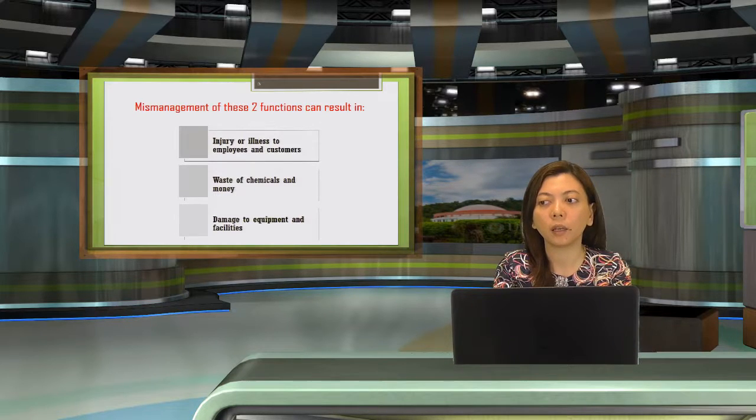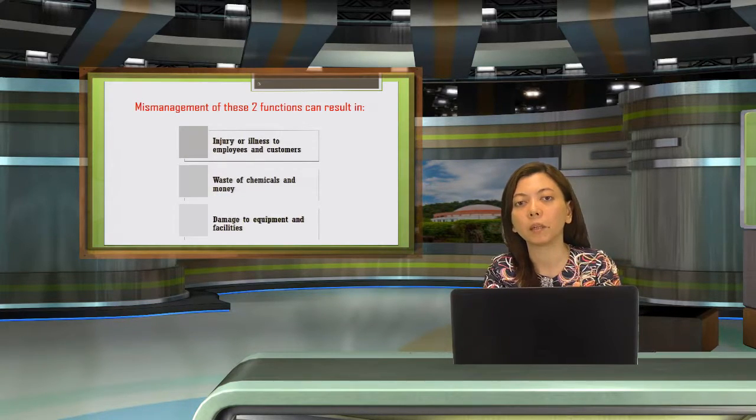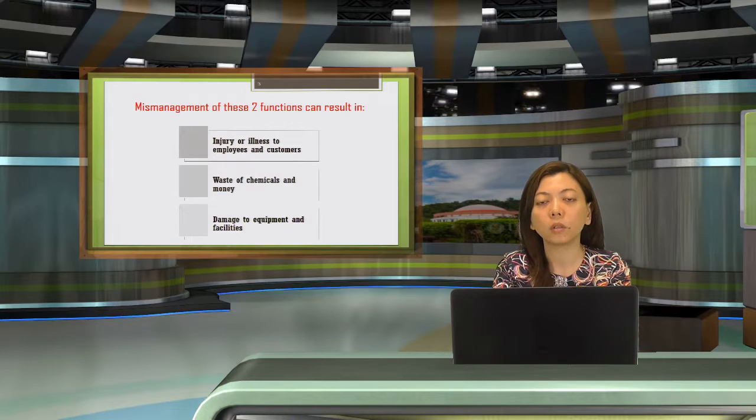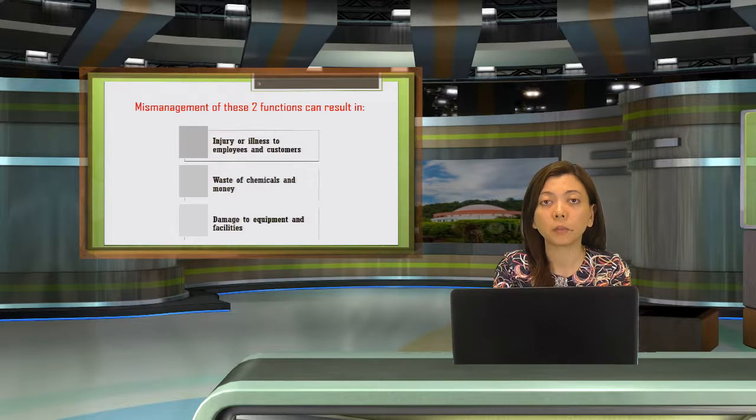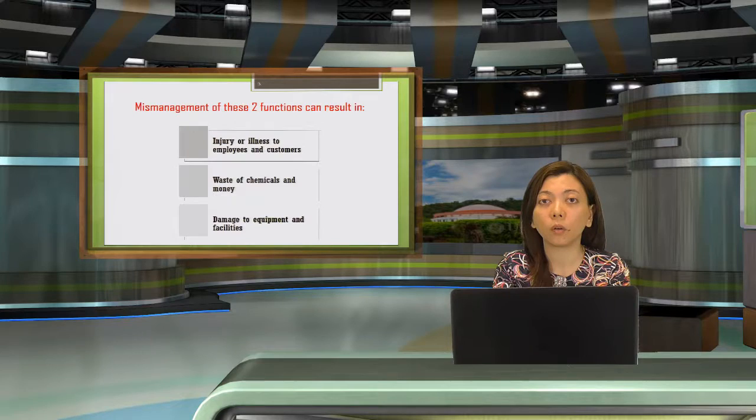The third one is damage to equipment and facilities. This can happen because only certain chemicals or compounds are suitable for certain materials. For instance, abrasive cleaners in the form of powders may not be suitable for stainless steel surfaces because they might scratch the surface of your equipment or countertop.